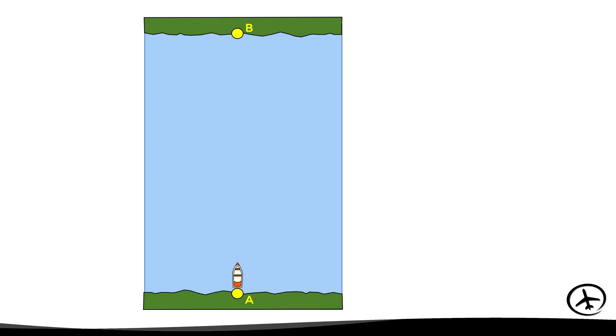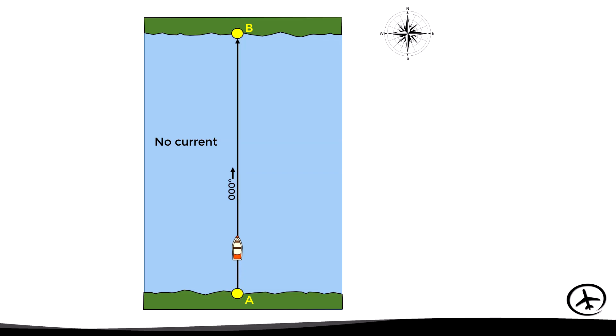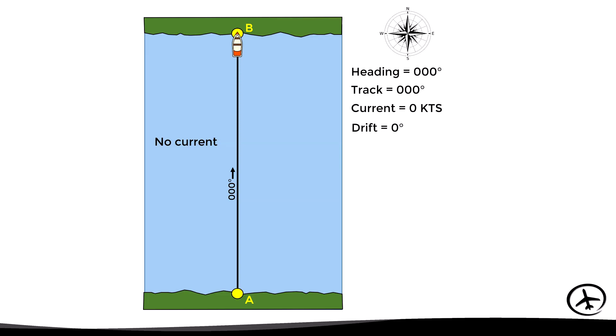Let's say there is no current. In this case, assuming that point B is exactly north of point A, the boat should sail with heading 360 degrees. Since there is no current, there will be no drift, and therefore the track will be 360 degrees as well.